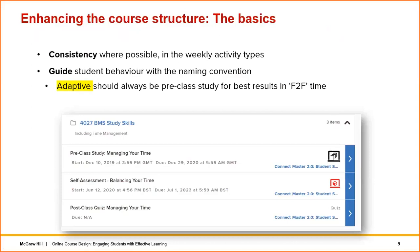We generally recommend that the adaptive component — SmartBook — be used prior to class or face-to-face time, because it helps students cover the lower levels of Bloom's taxonomy, such as understanding and remembering. This allows you to focus on higher-level activities together in class. You don't have to follow that sequence, but it is the most common and effective approach we see.